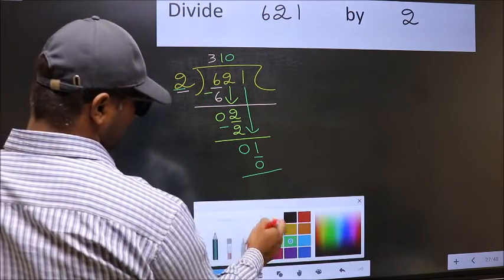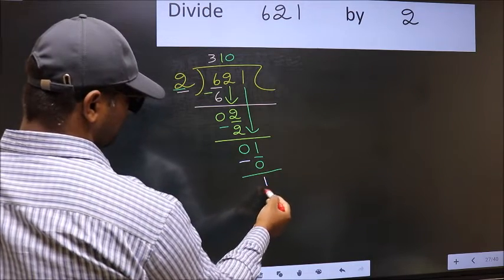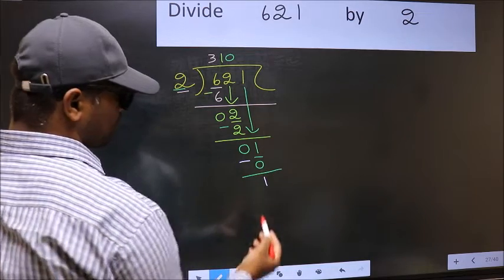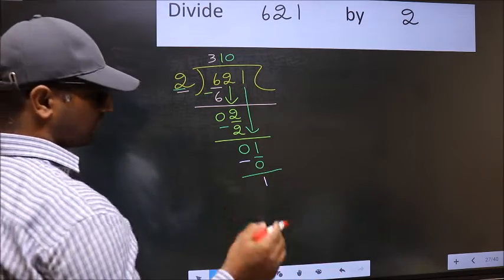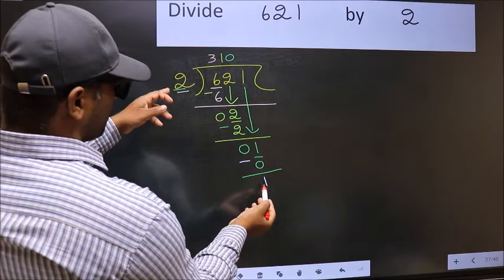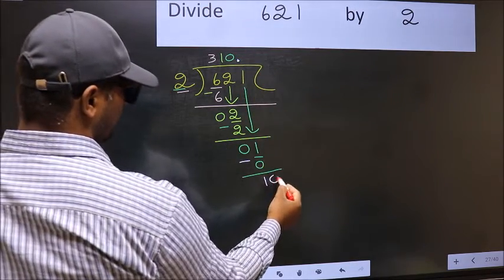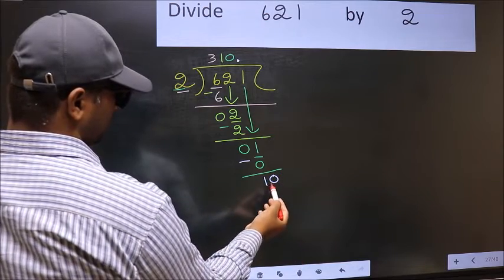Now you subtract. 1 minus 0, 1. Over here, we did not bring any number down. And also 1 is smaller than 2. So now you can put a dot and take 0. So 10.